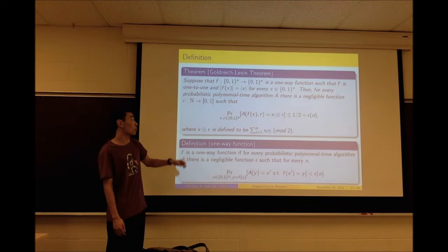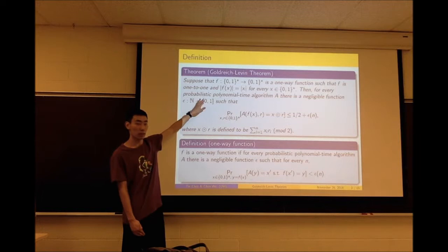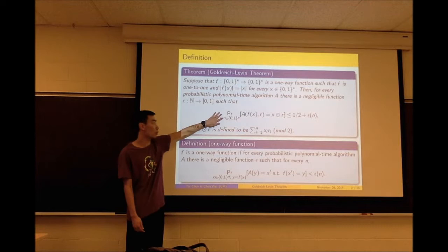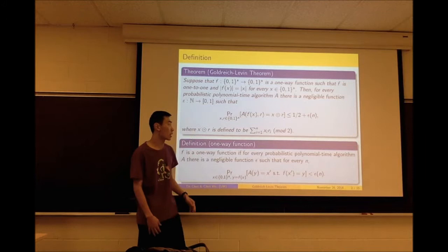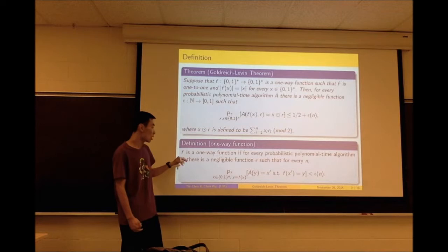Let's review the Goldreich-Levin theorem. If we have a one-way function f such that it is one-to-one and the length of f(x) equals the length of x for every x, then for every probabilistic polynomial time algorithm A, there is a negligible function ε such that the probability over all x and r that A(f(x), r) equals x dot r is less than or equal to 1/2 plus ε(n), where x dot r is the inner product of the two vectors x and r.